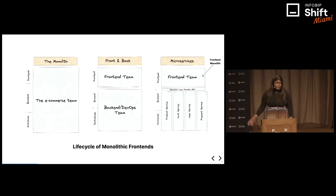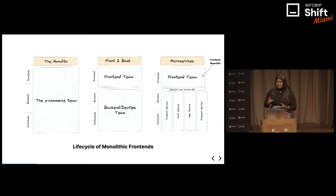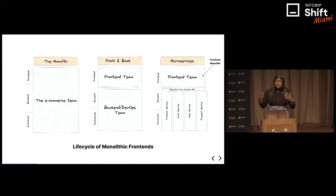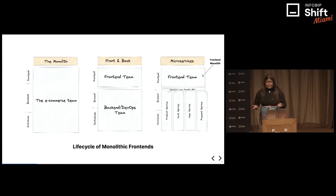I just want to quickly show you the lifecycle of a monolith frontend. A monolith application is essentially an app built as a single unit — you have the frontend, the backend, and the database logic all infused in one application, typically with one team working on it. Over the years, we've seen different adoptions of services like microservices come into play. Microservices split up the backend logic into several different services, with different teams working on it split by functionality. But the problem is the frontend still remains the large monolith frontend.